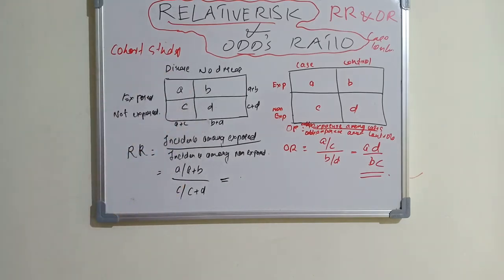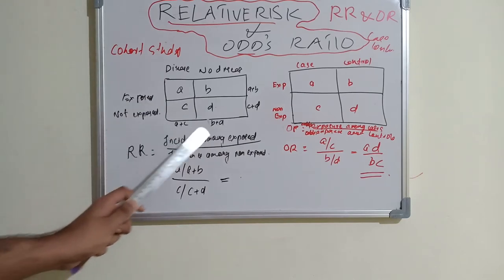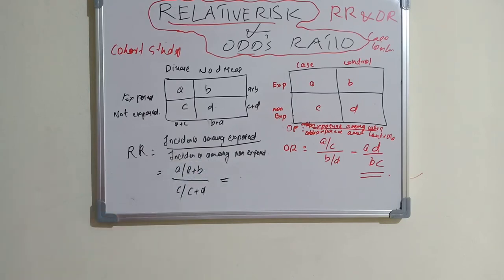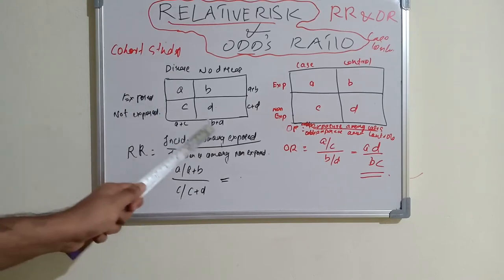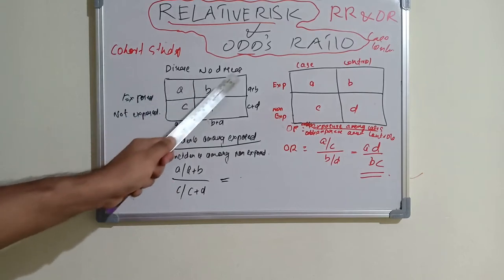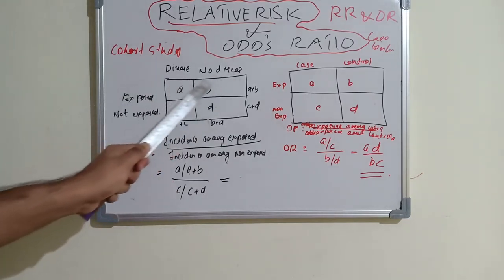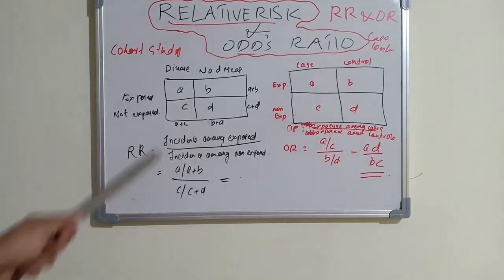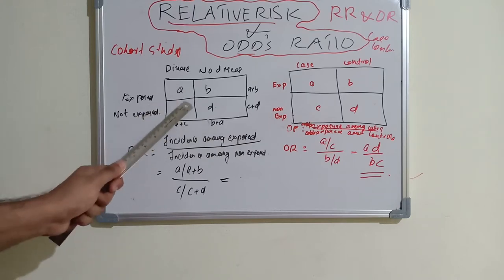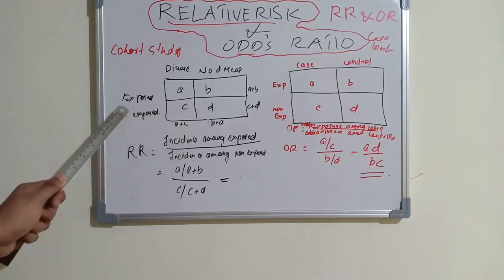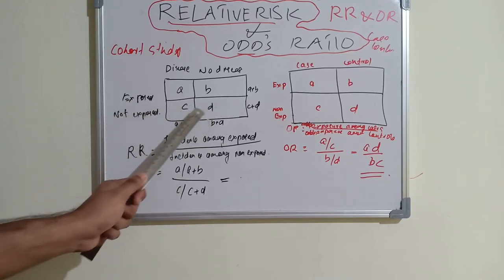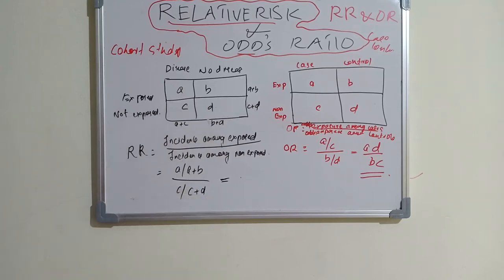The formula for relative risk is: incidence among exposed divided by incidence among non-exposed. Incidence is the number of new cases — that is 'a' among exposed, and the total number of exposed is a + b (horizontal). So incidence among exposed is a / (a + b). Incidence among non-exposed uses 'c', with total non-exposed being c + d, so it is c / (c + d). Therefore, relative risk = [a / (a + b)] / [c / (c + d)].